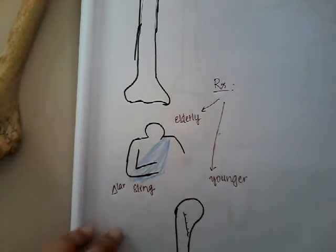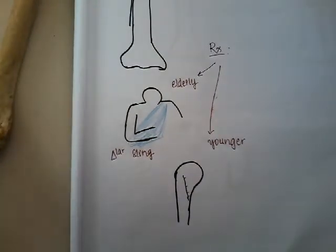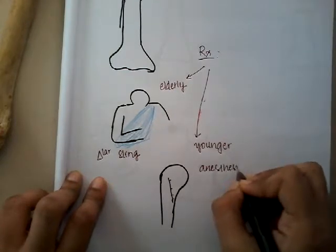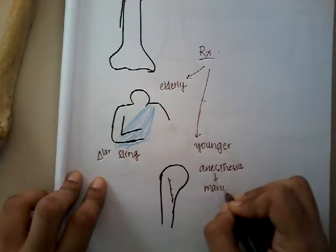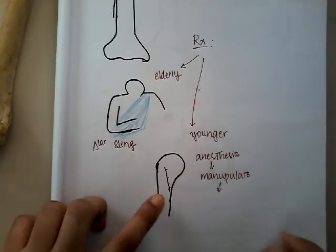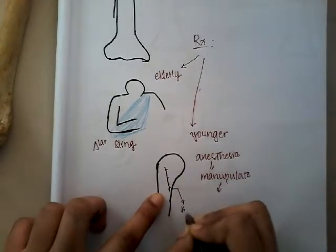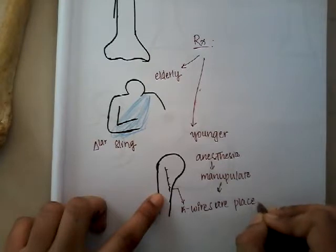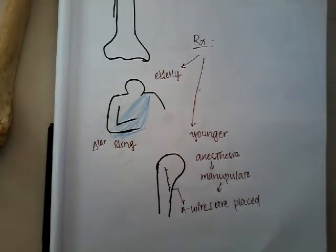In younger patients, because the fracture is widely displaced, we will have to reduce it under anesthesia — manipulate and then reduce it. Once the fracture has been reduced, you can put K-wires to it. Multiple K-wires can be placed. We do this under image intensifier, percutaneously.